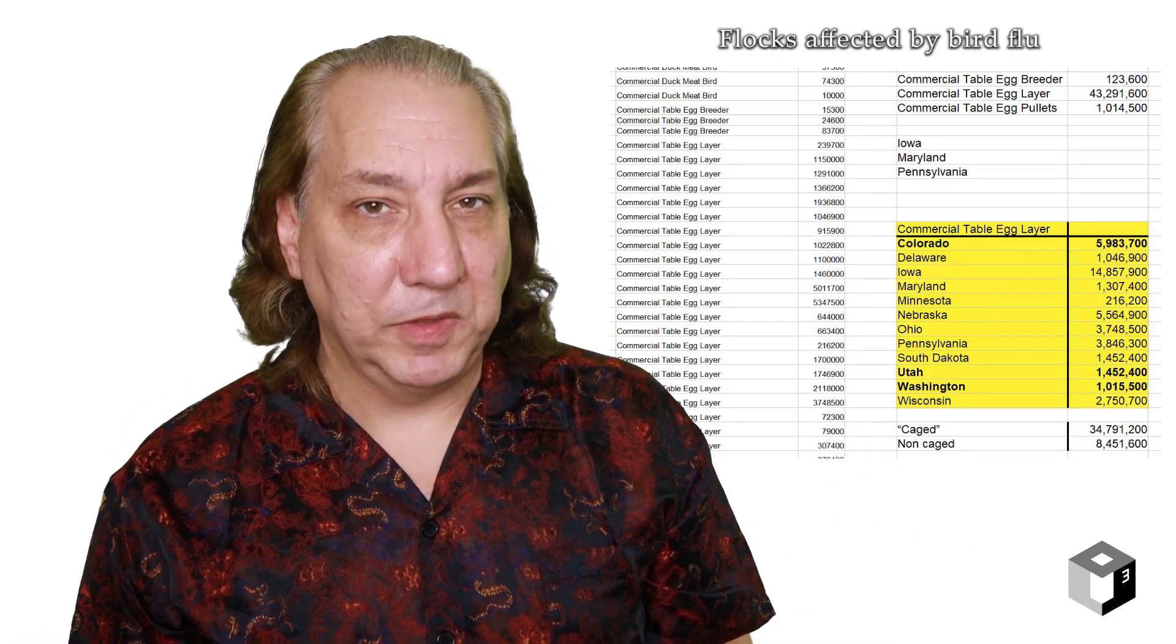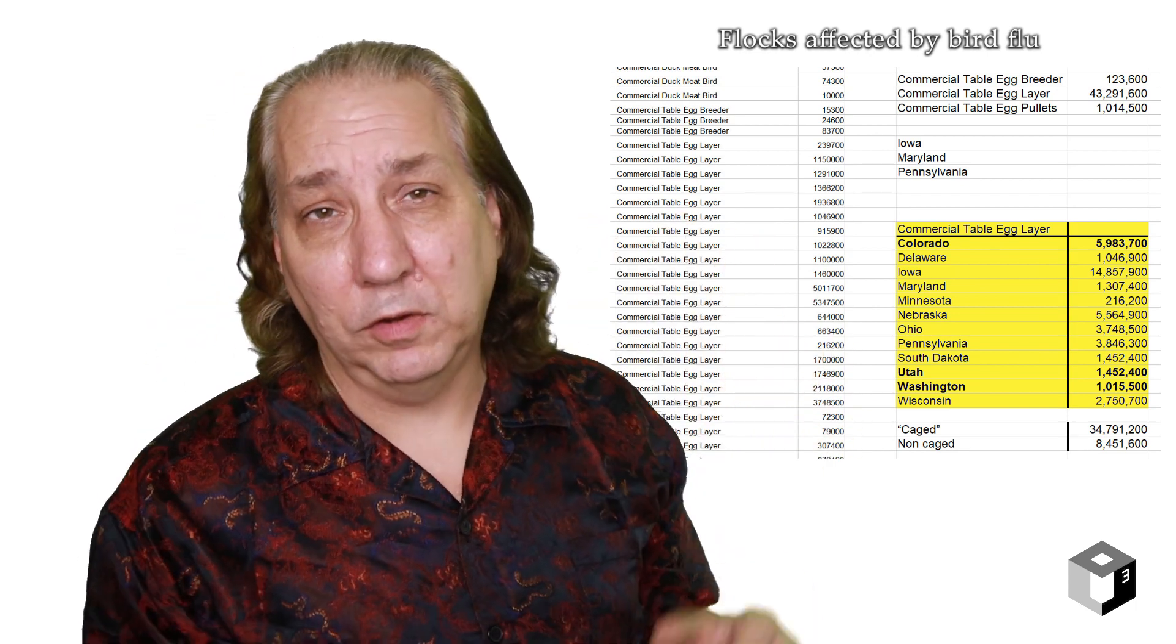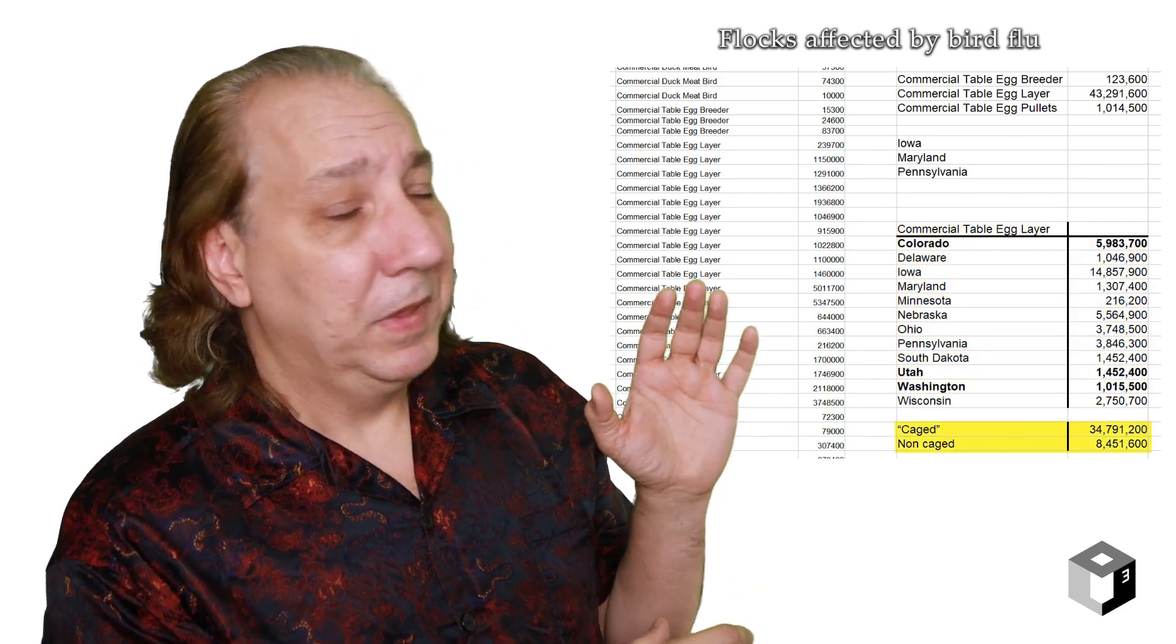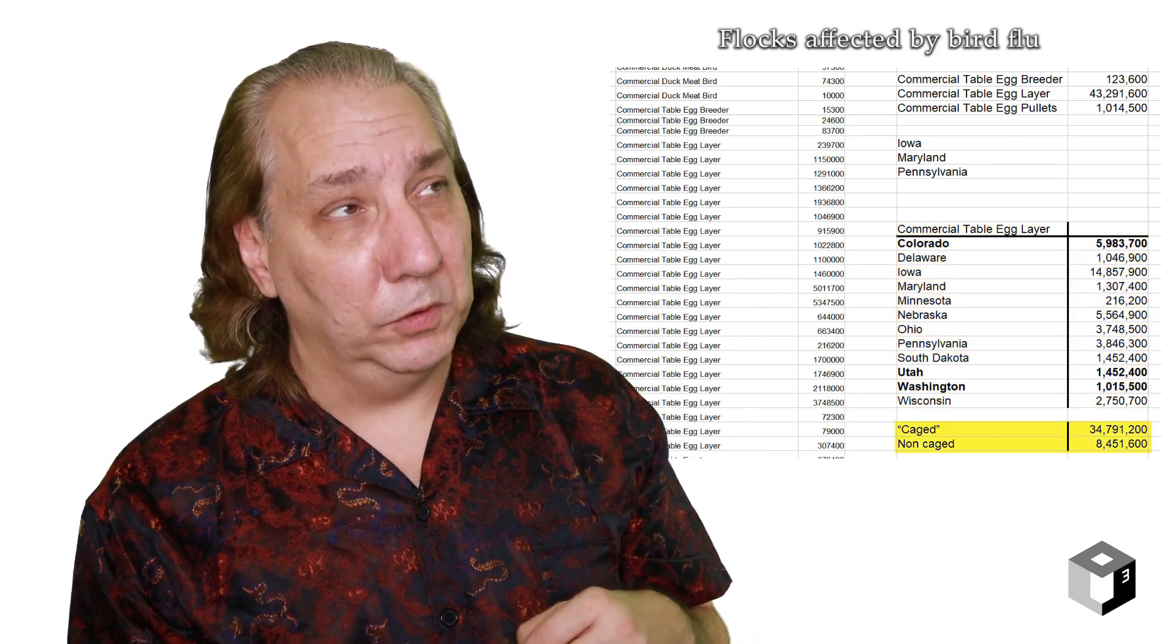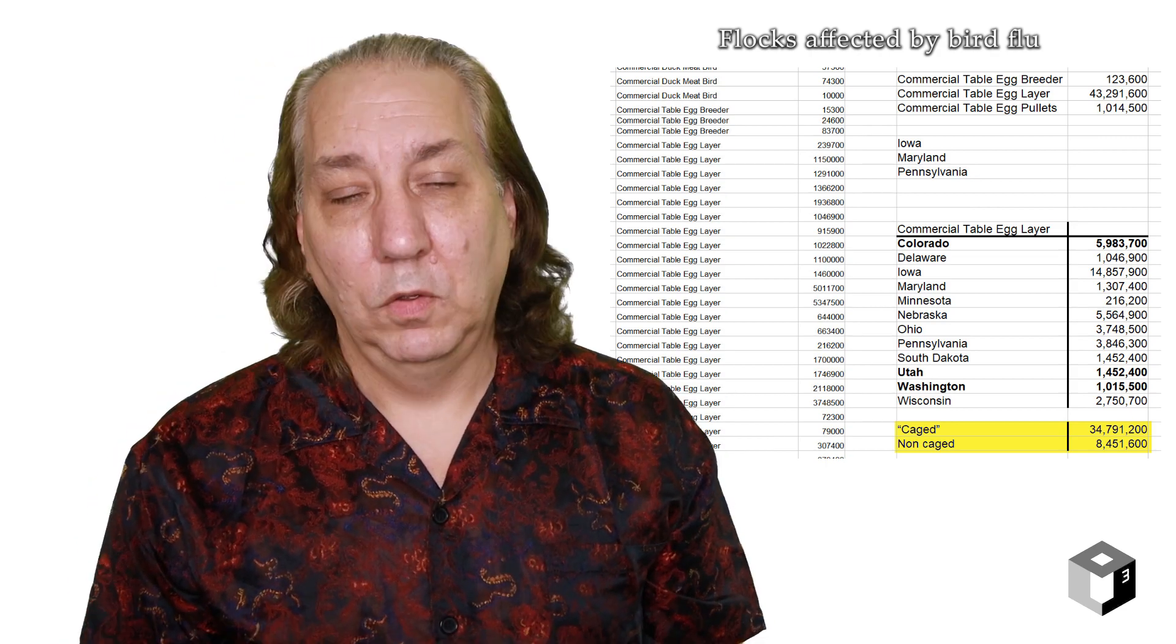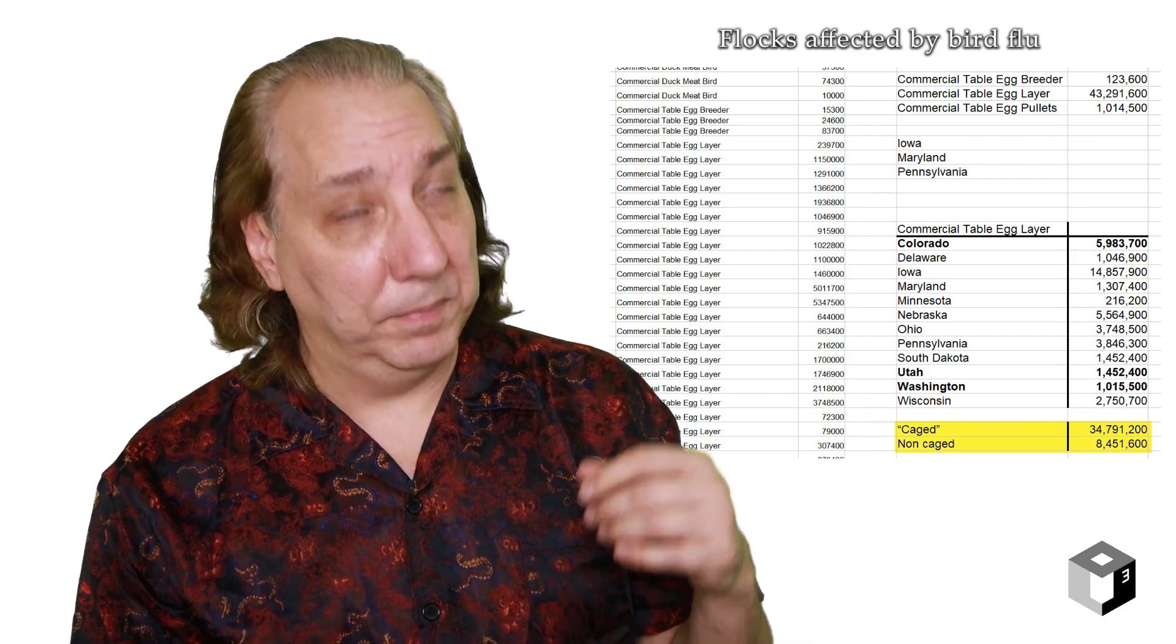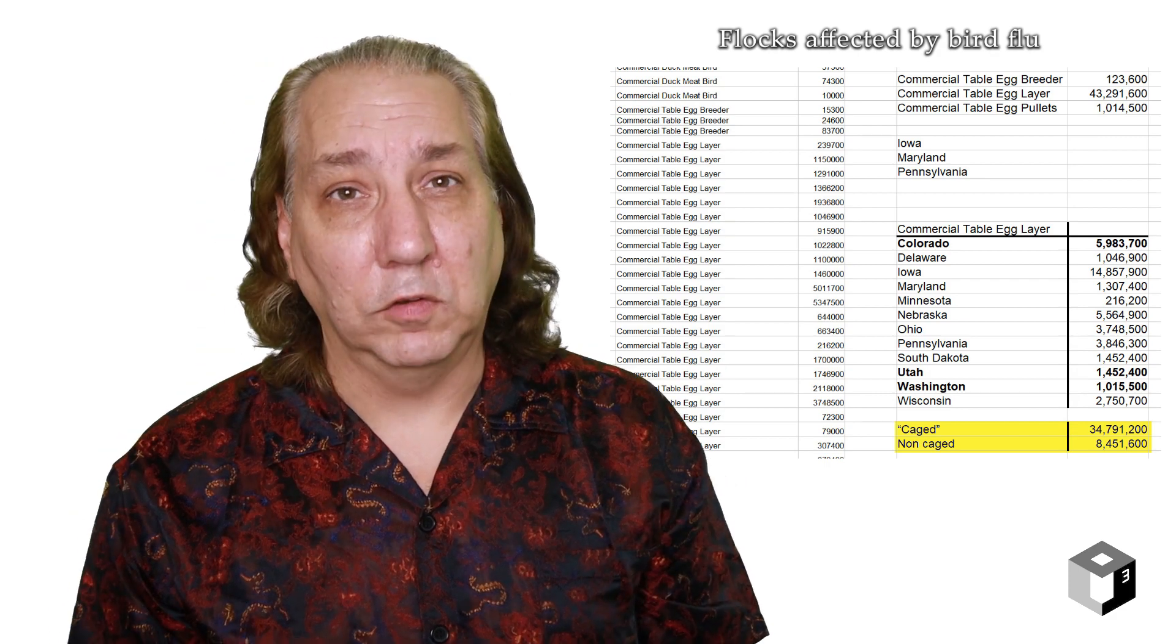I downloaded the chart from the USDA, and I excluded everything except for the table egg layers. Those were the chickens that I was interested in. I created a chart, and you'll notice that there were about four times as many birds with avian flu in caged flocks as there are in uncaged flocks, which means, if anything, the caged birds are overrepresented, albeit slightly, due to the ratio of caged birds to uncaged flocks.